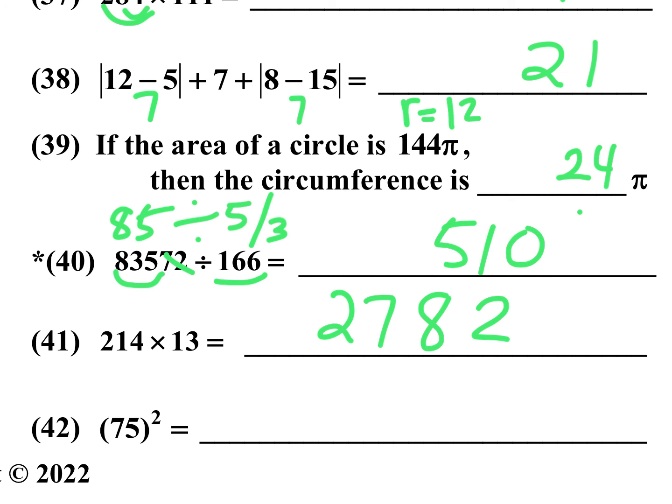And number 42, the last one in this column, 75 squared is 75 times 75. So anytime you have something like this, I think you already know, multiply 5 times 5, you write 25. Bump this by 1. 7 times 8 is 56. So the answer is 5,625.